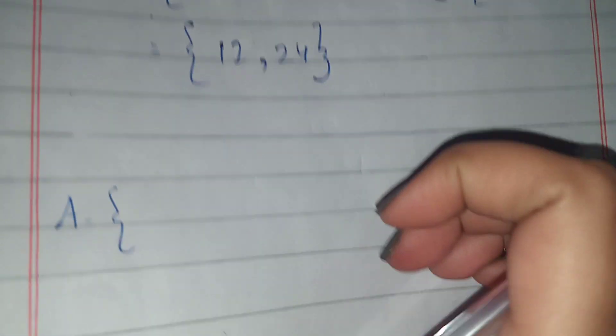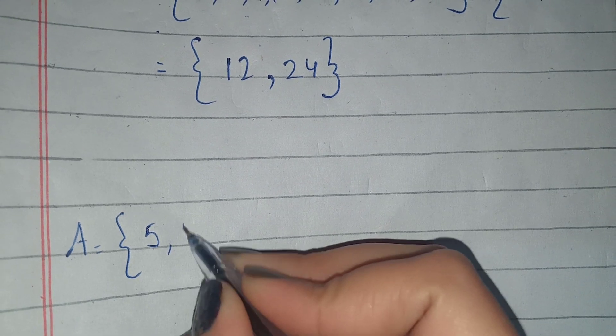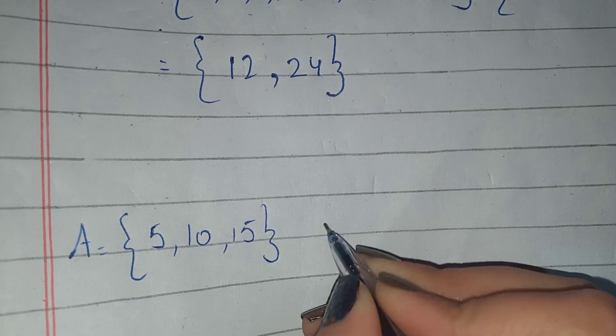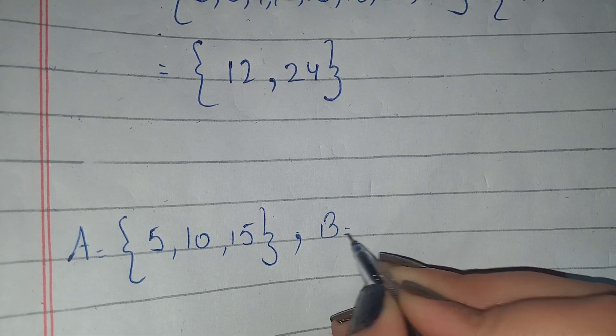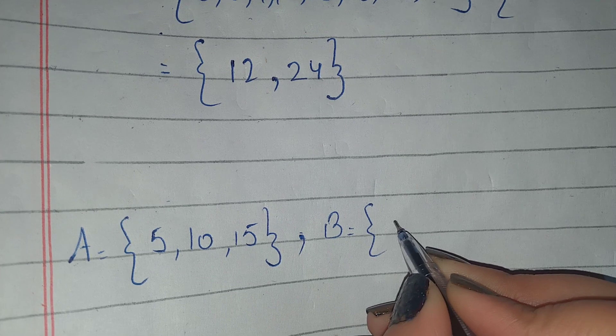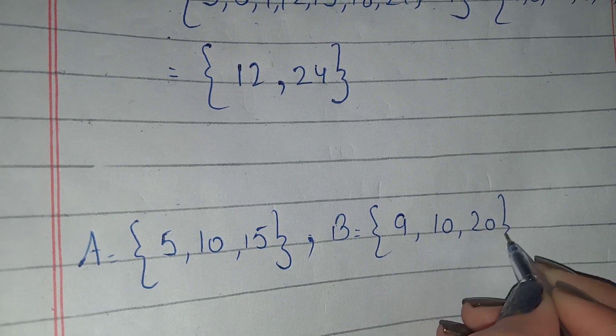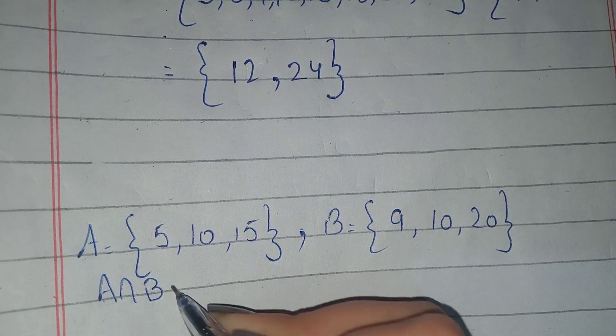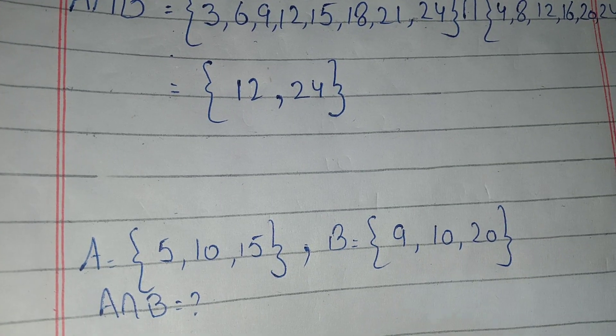For example, if A equals 5, 10, 15, and B equals 9, 10, 20, you have to tell me what A intersection B equals.